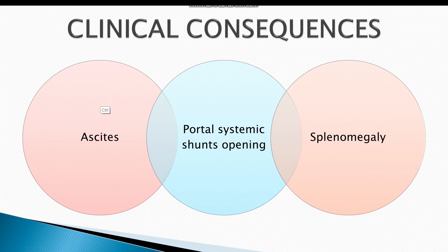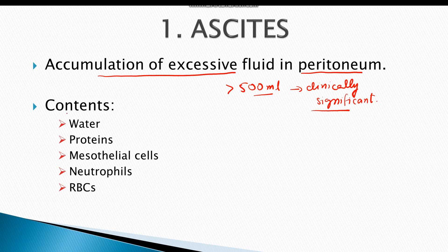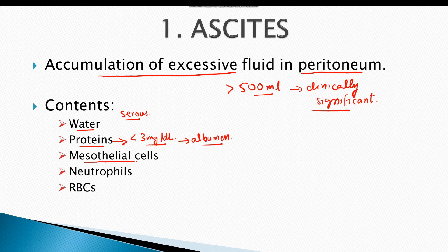The clinical consequences of portal hypertension are ascites, activation of portal-systemic shunts, and congestive splenomegaly. Ascites means accumulation of excessive fluid within the peritoneum — this fluid must be greater than 500 ml to be clinically significant. The ascitic fluid is mostly serous, composed of water and proteins with albumin concentration mostly less than 3 g/dL. Neutrophils indicate infection, and red blood cells are seen in intra-abdominal cancer.